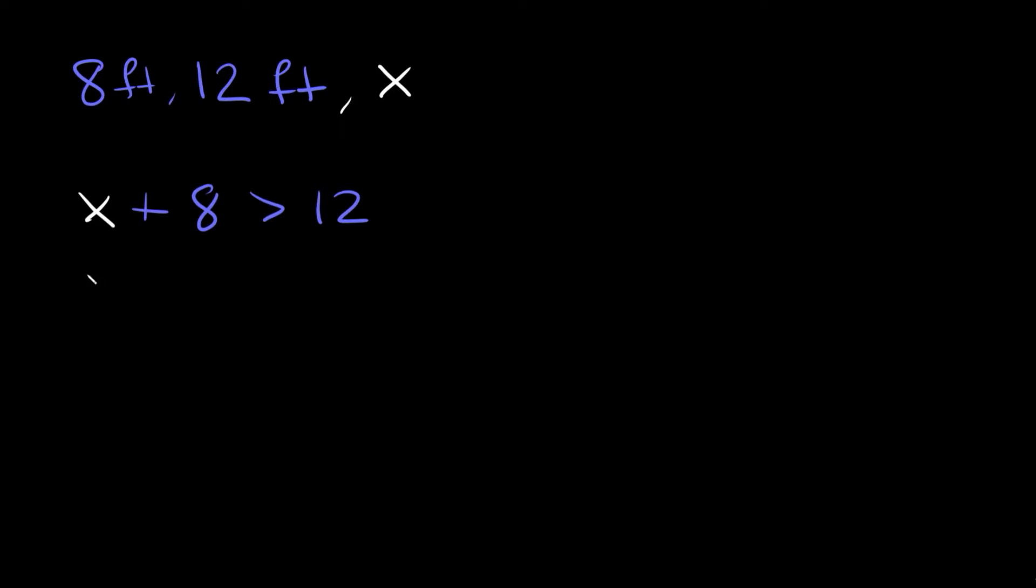Okay, now let's flip these. Now we can say x plus the other number 12, and this time we'll say it's greater than this guy, 8. All right, so we're just flipping those. Now the last combination is just adding the two numbers together. So we can say 8 plus 12 is greater than the last term x.